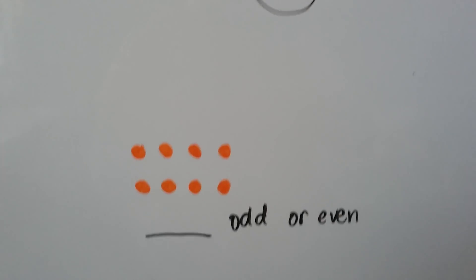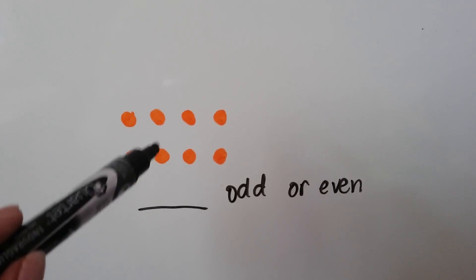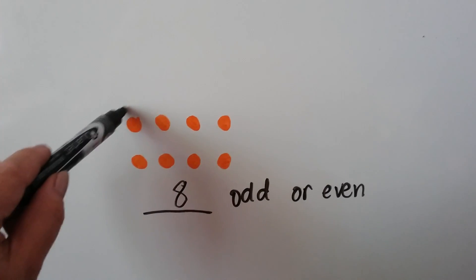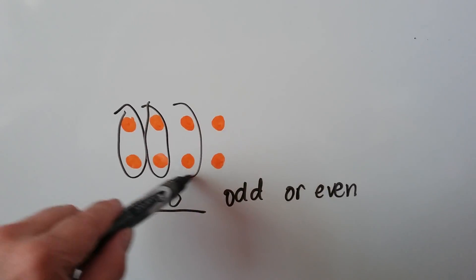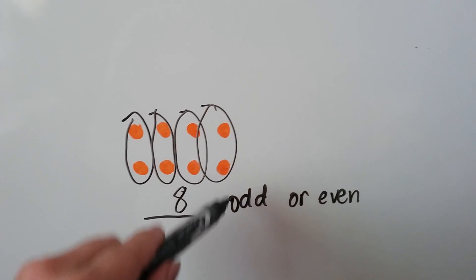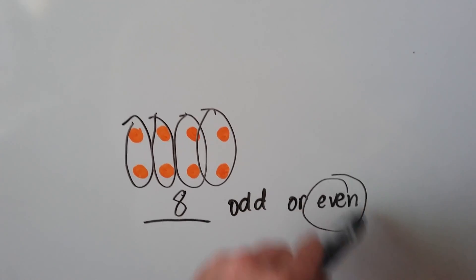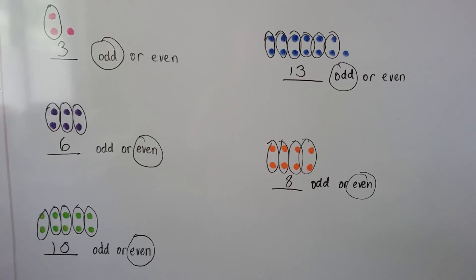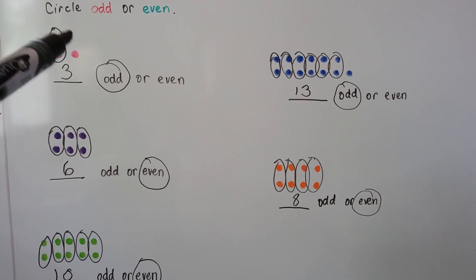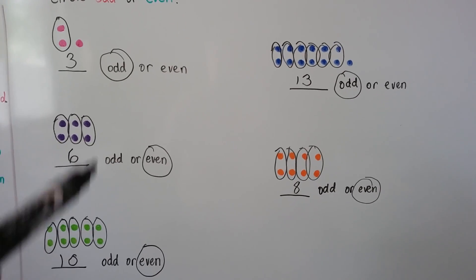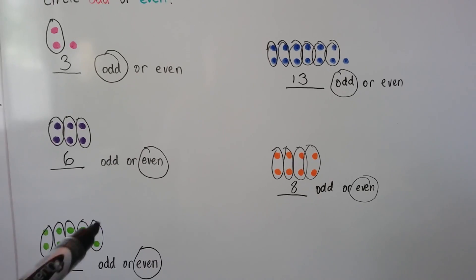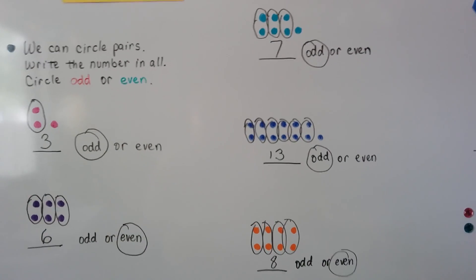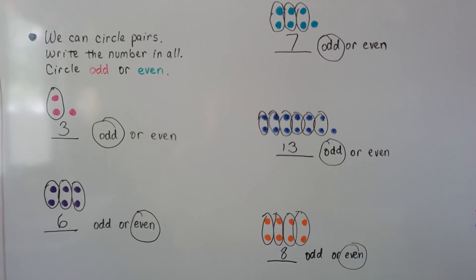Let's try this one. We have 1, 2, 3, 4, 5, 6, 7, 8. We'll make pairs — there's none left over, so it's even. Did you notice something about these? We can just look and see if there's one by itself, it's going to have a leftover. The ones that didn't have one by itself had none left over; the ones that did were odd.